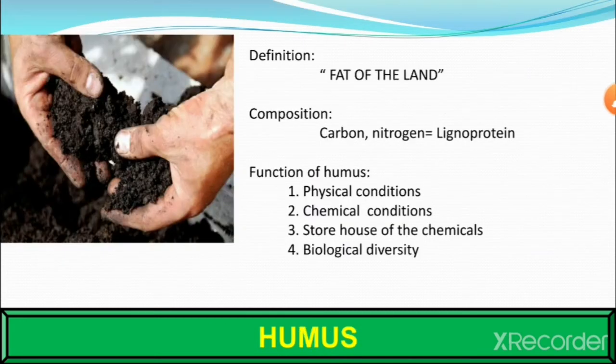A precise definition of humus is rather difficult. Humus is a mass of resistant residual organic matter formed as a result of decomposition and the synthesis of organic matter under soil conditions.